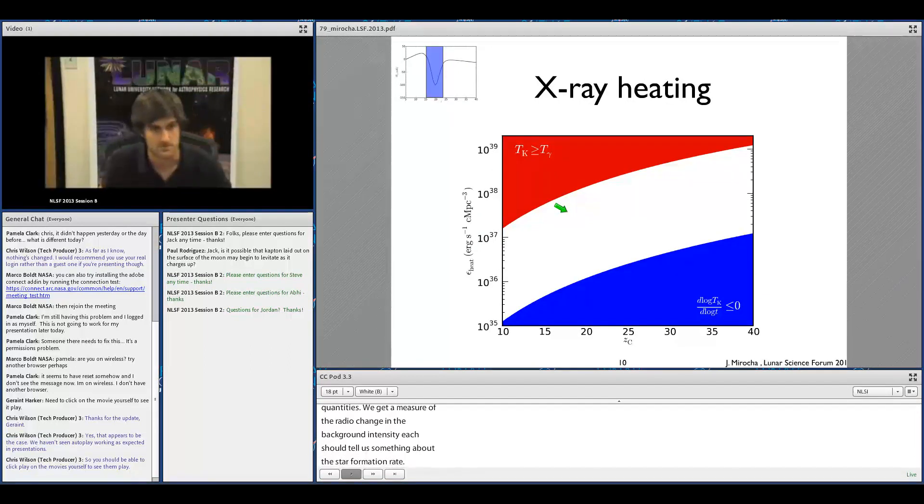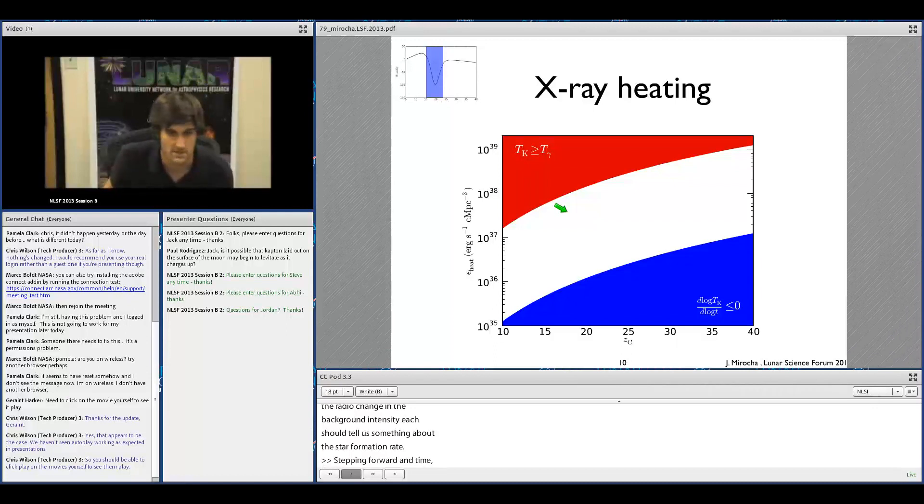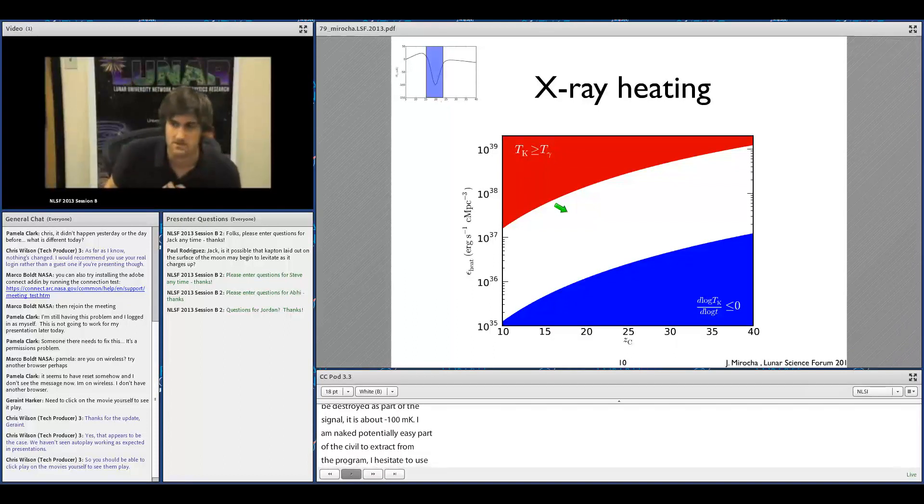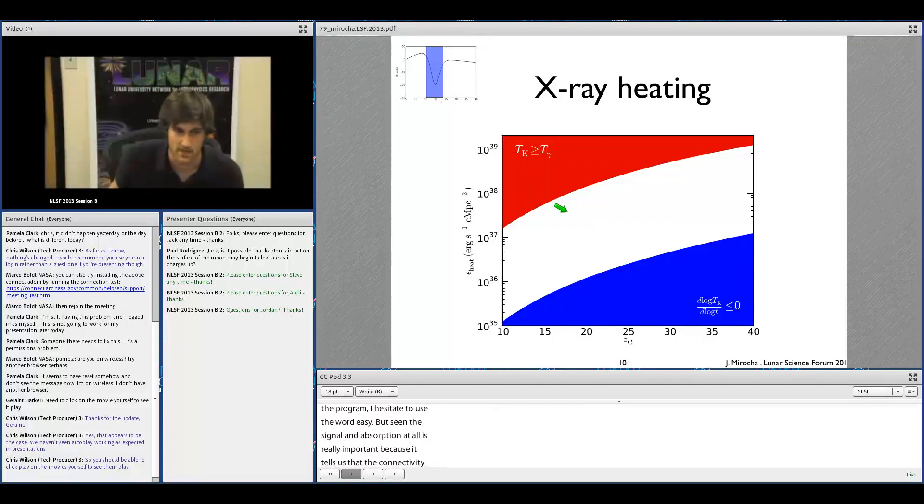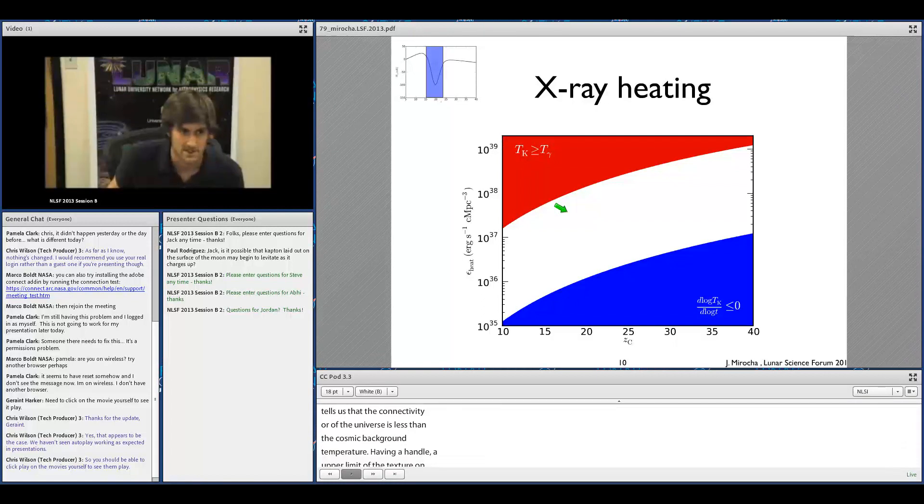Stepping forward in time a little bit, I want to focus mostly on this x-ray heating epoch. It has the potential to be the strongest part of the signal. In our fiducial models, it's about minus 100 millikelvin. Making it potentially the easiest part of the signal to extract from the foreground. But seeing the signal in absorption at all is really important because it tells us that the kinetic temperature of the universe is less than the cosmic microwave background temperature. So just having a handle, an upper limit on the temperature of the universe, gives us an upper limit on the amount of energy that could have been injected into the universe prior to that time.